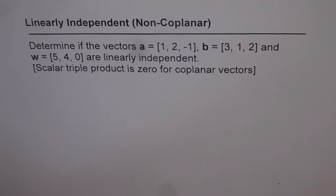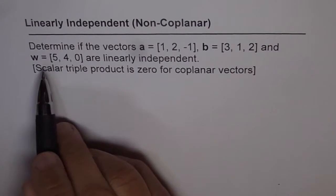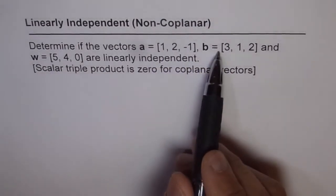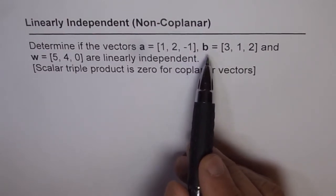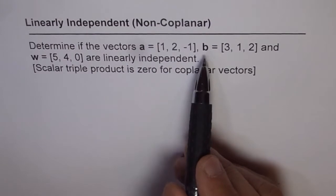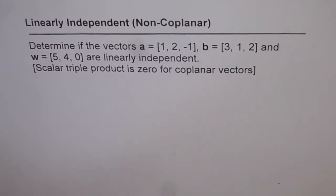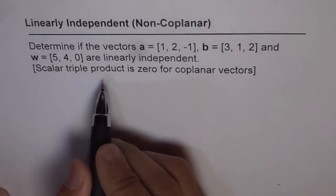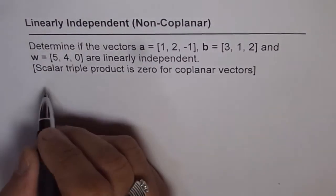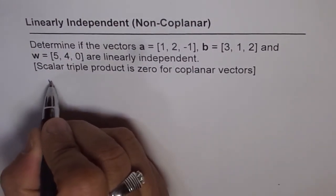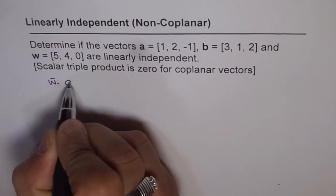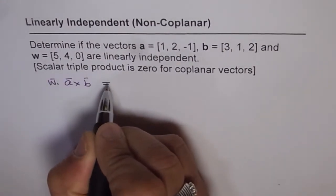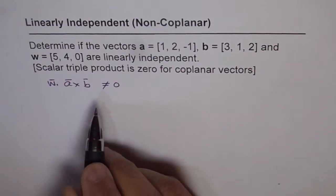We had a similar example when we were talking about linear combination — we were trying to find vector B as a linear combination of the other two. If that is not possible, then we say they are not coplanar, or they are not linearly dependent. Now I will show you a different technique: the scalar triple product. If W dot (A cross B) is not equal to 0, that means they are not in the same plane.